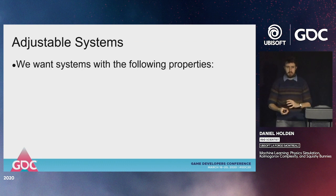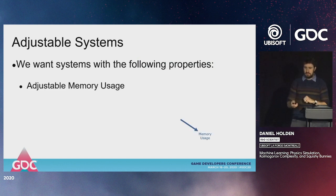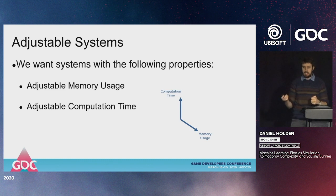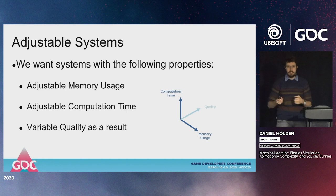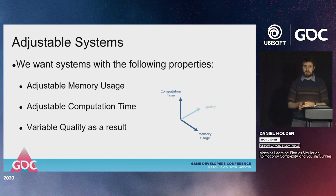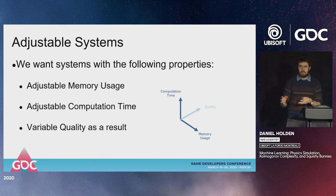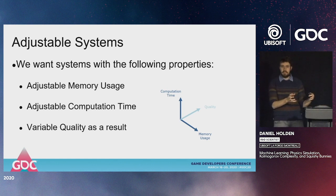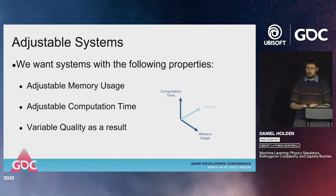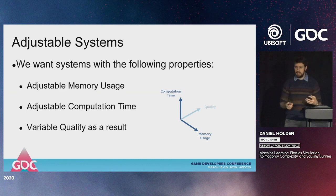More concretely, what we want are adjustable systems — systems where we can adjust memory usage and computation time, and as a result the quality changes. Lots of systems in games are already like this. For example, physics simulations where you can dial down the number of iterations or time steps, or rendering problems where we use a simpler algorithm at lower quality. But is there a more general way of encompassing this idea?